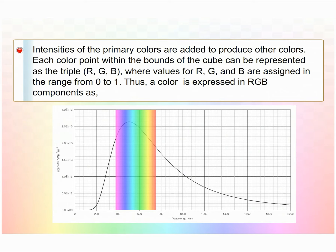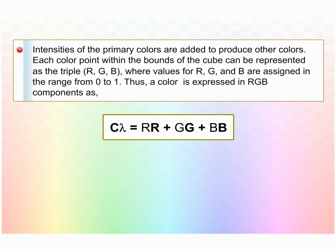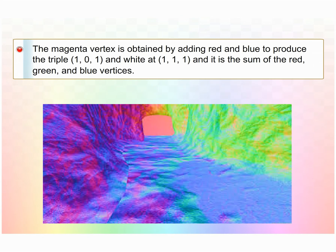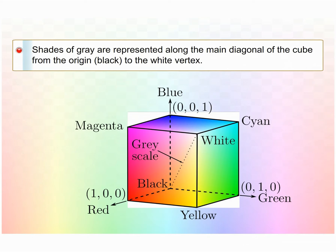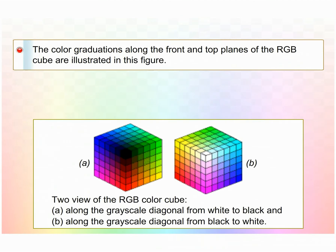The color Cλ is represented in RGB components as Cλ = R·R + G·G + B·B. The magenta vertex is obtained by adding red and blue to produce the triple (1, 0, 1), and white at (1, 1, 1) is the sum of the red, green, and blue vertices. Shades of gray are represented along the main diagonal of the cube from the origin (black) to the white vertex. Each point along this diagonal has an equal contribution from each primary color, so a gray shade halfway between black and white is represented as (0.5, 0.5, 0.5). The color graduations along the front and top planes of the RGB cube are illustrated in a figure.